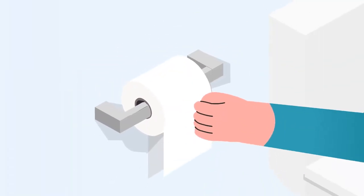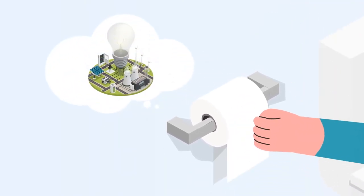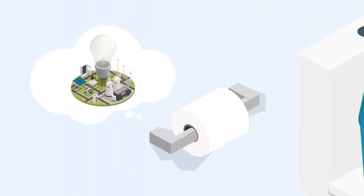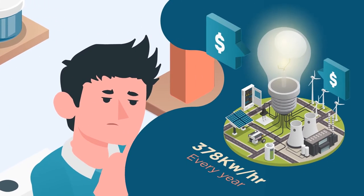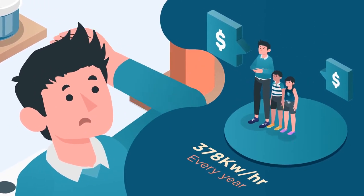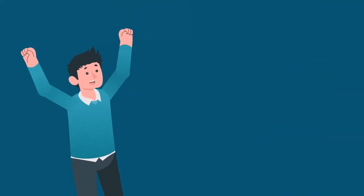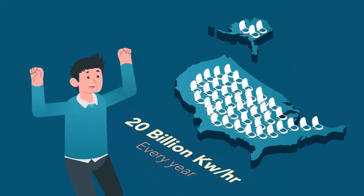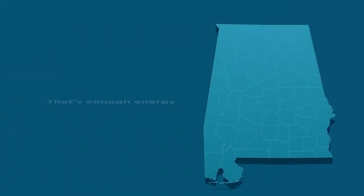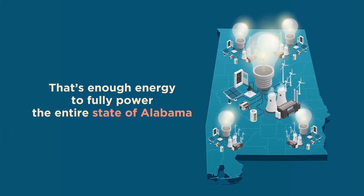But water isn't the only resource wasted for our wiping needs. Producing toilet paper also uses a lot of electricity. By eliminating toilet paper, Ed's family would save 378 kilowatt hours from being used every year. If American adults switched to a bidet, almost 20 billion kilowatt hours would be saved annually. That's enough energy to fully power the state of Alabama for an entire year.